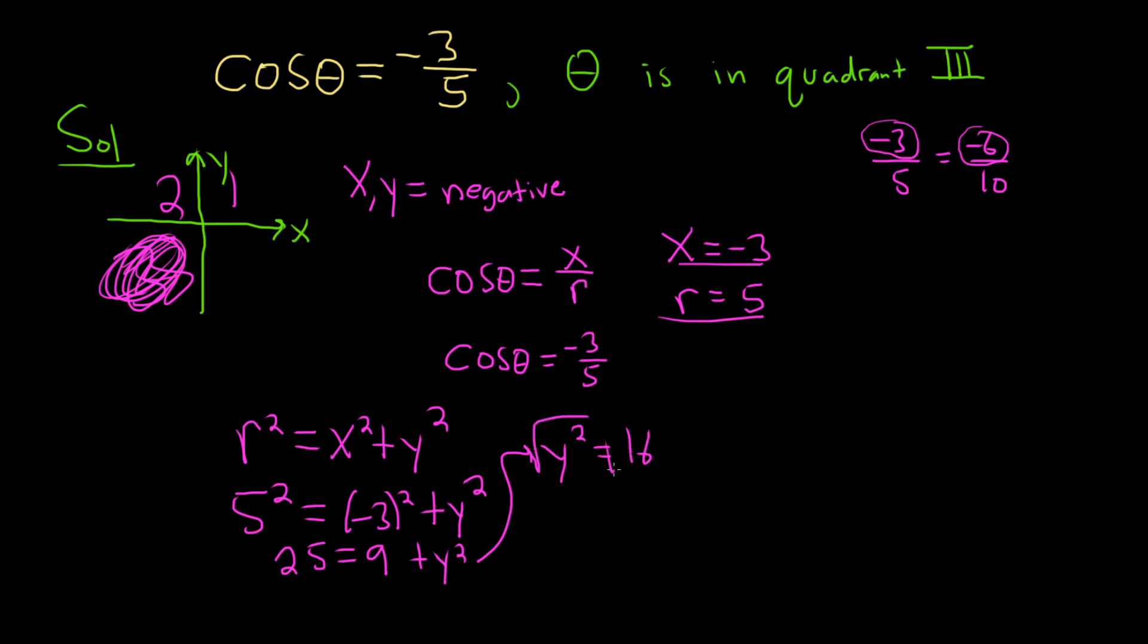Taking the square root will give us y equals plus or minus 4. So now we've got to go back to the quadrant. We know that it's negative. So y equals negative 4. So that's going to be our y.